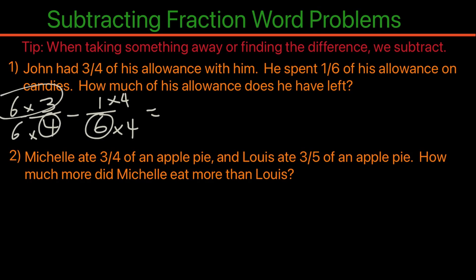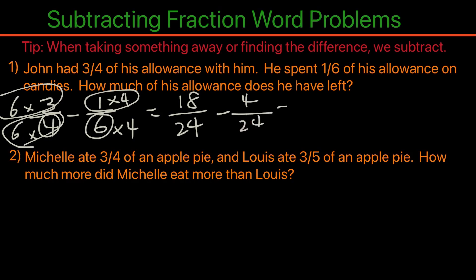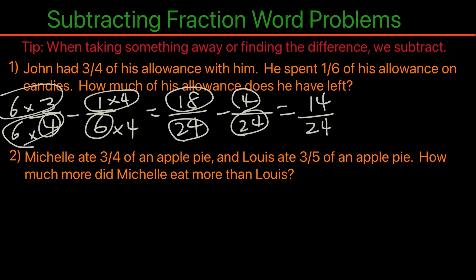Now we rewrite them. Six times three is 18, and six times four is 24. Then we subtract: one times four is four, and six times four is 24. Now we have a common denominator, so we just need to subtract the numerators: 18 minus four is 14 over 24. We can see both numerator and denominator can divide by two, so this simplifies to seven over 12. Seven over 12 is how much of his allowance is still left.